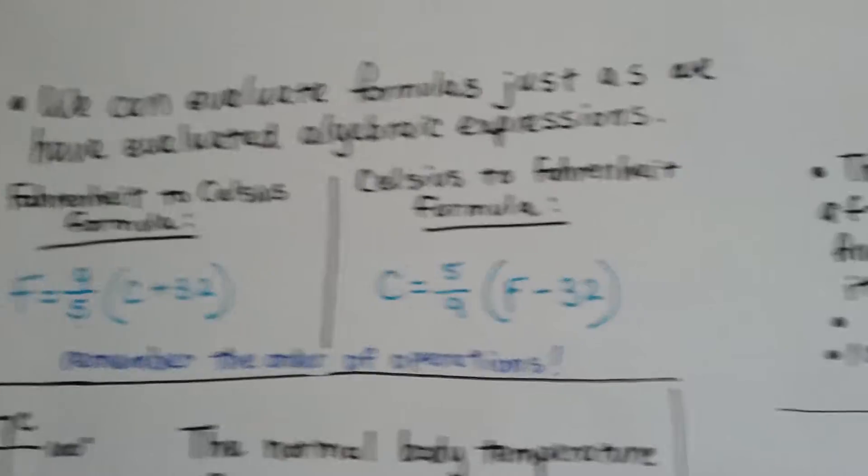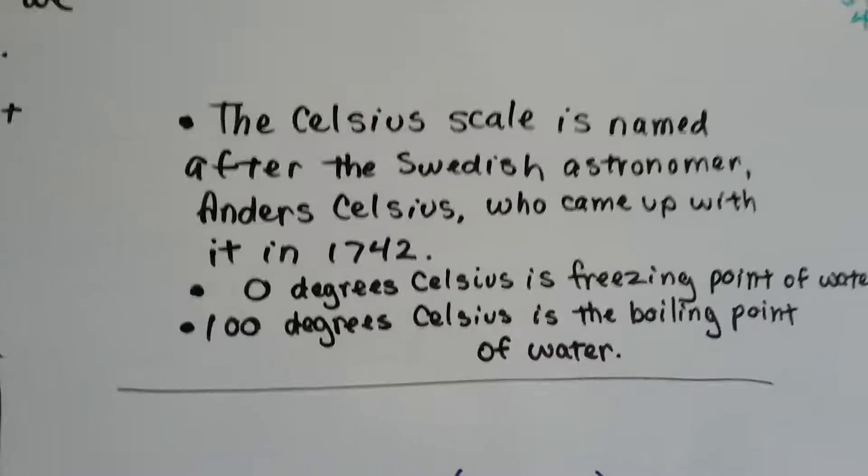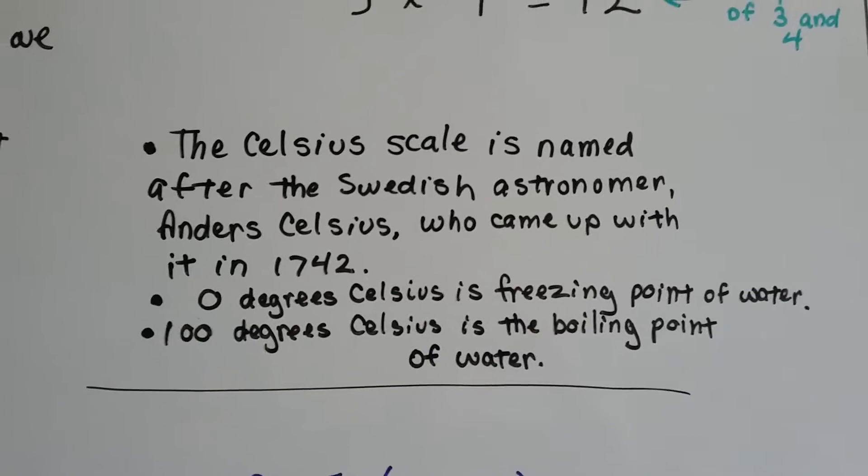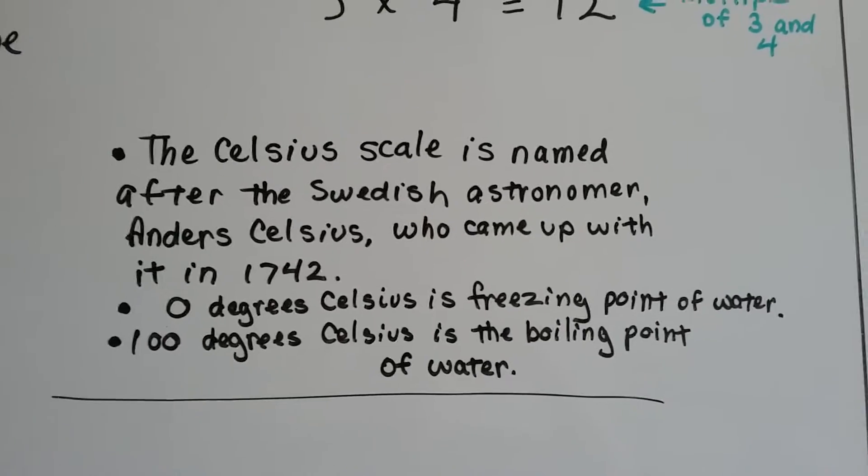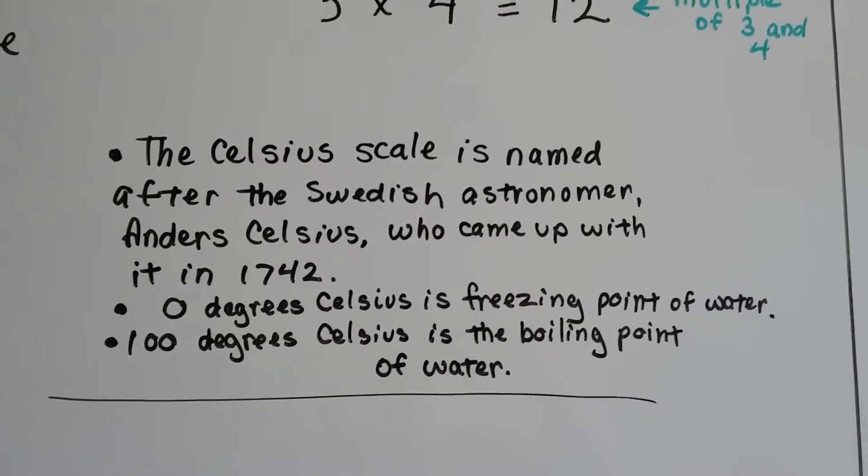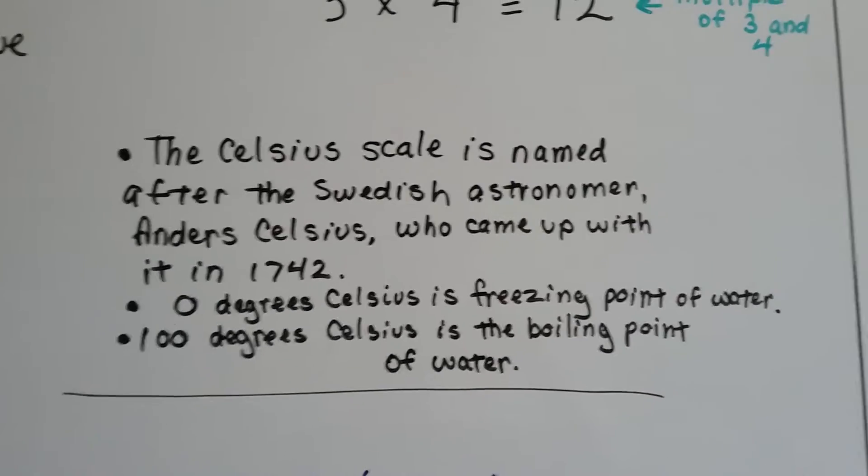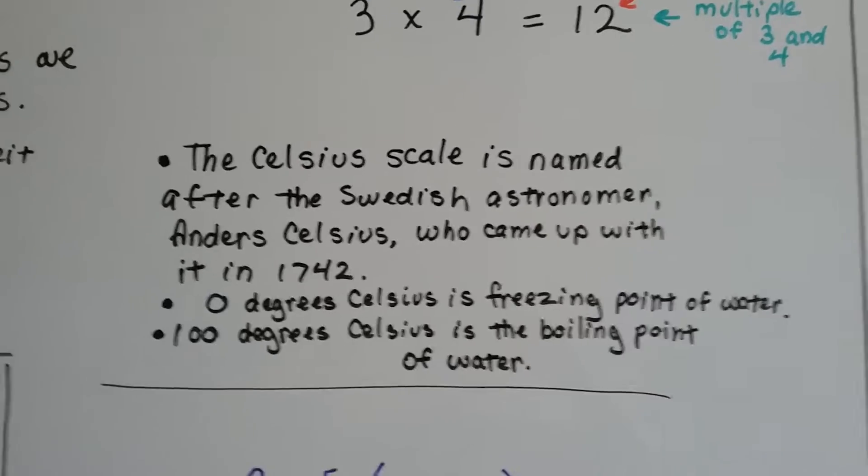Remember the order of operations. The Celsius scale is named after a Swedish astronomer named Anders Celsius, who came up with it in 1742. Zero degrees Celsius is the freezing point of water, and 100 degrees Celsius is the boiling point of water. That's pretty easy to remember.